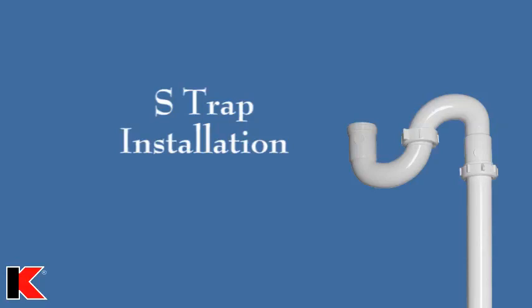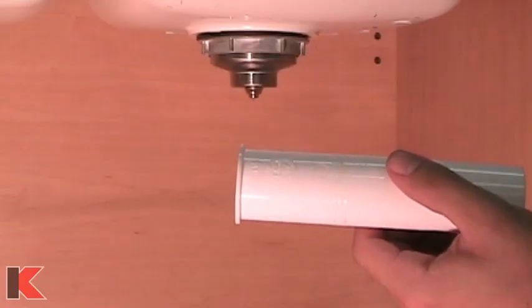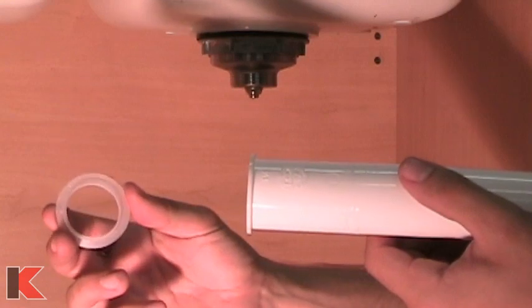This video demonstrates the installation of an S-trap for the drainage of wastewater through a floor outlet. Start by making sure the tailpiece nut has been removed from the sink strainer.